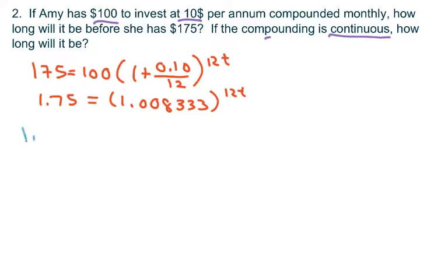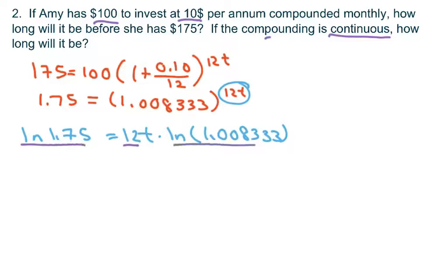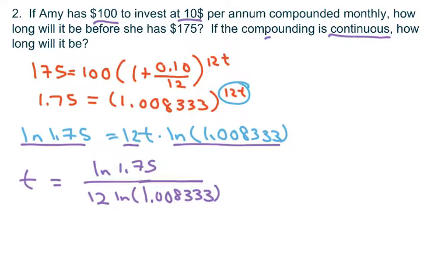So we take ln of both sides. I'm going to go ahead and bring this in front. So this is going to equal 12t times ln of 1.008333. And then solve for t, basically just going to divide this side by that. So t will be left alone. So you have t equals ln 1.75 over 12 ln of 1.008333, which is approximately 5.62 years. So that's compounded monthly, which is also about 67.43 months.